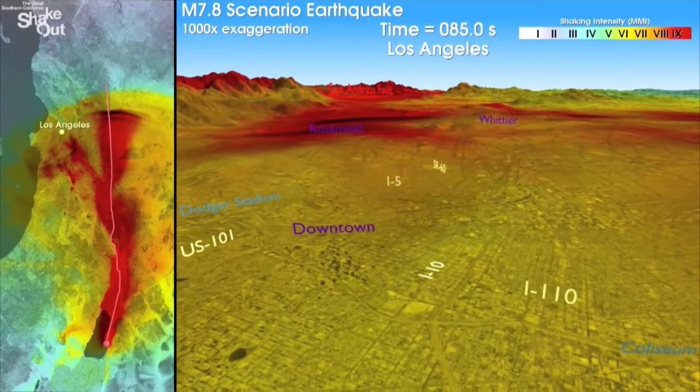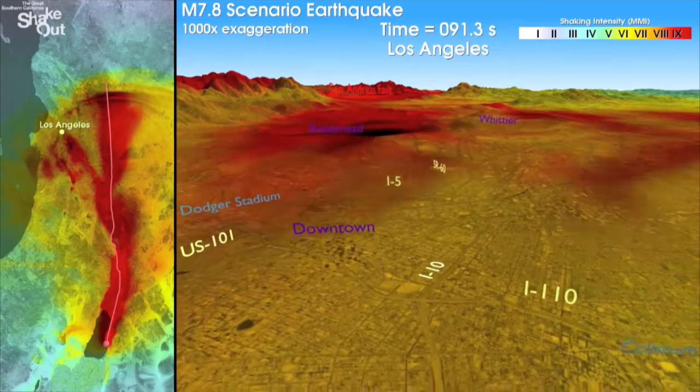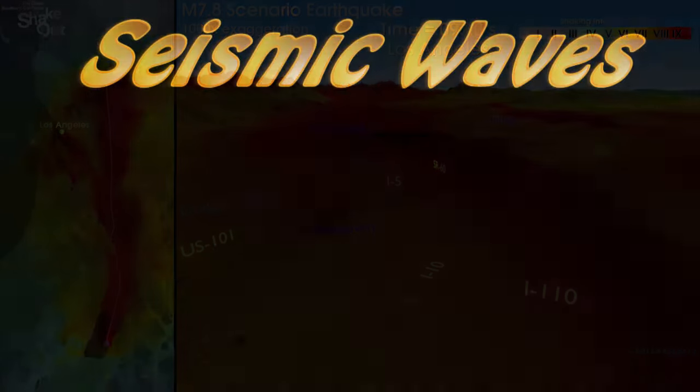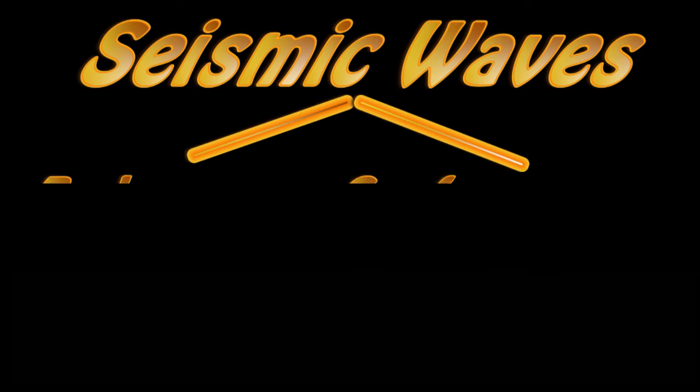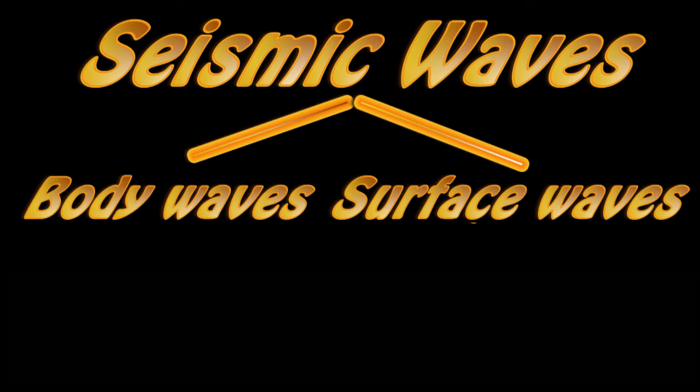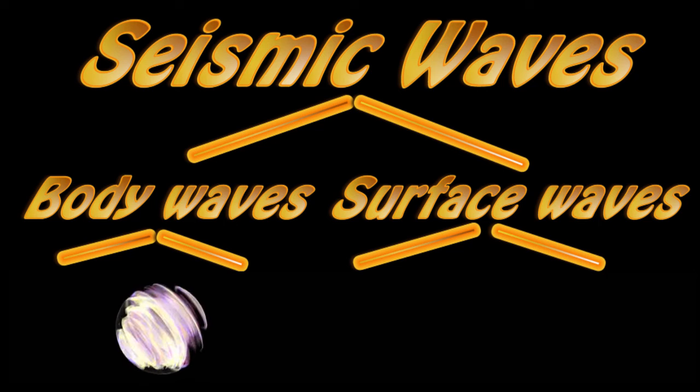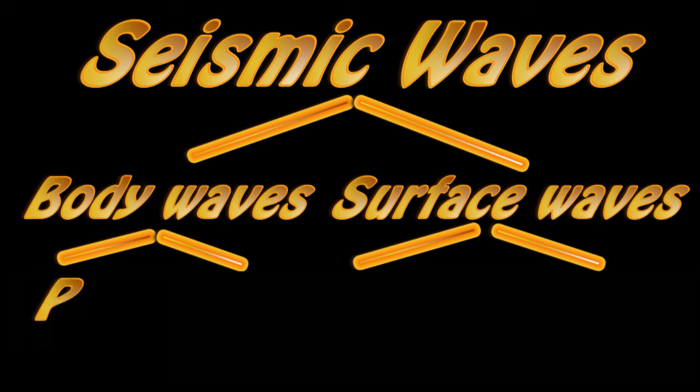But seismic waves come in a variety of flavors. The variety of seismic waves are broken first into the body waves and the surface waves, but each of those is further split in two. Let's start with the waves inside the Earth, the body waves. The two types of body waves are easily demonstrated with a good spring, like a slinky toy.